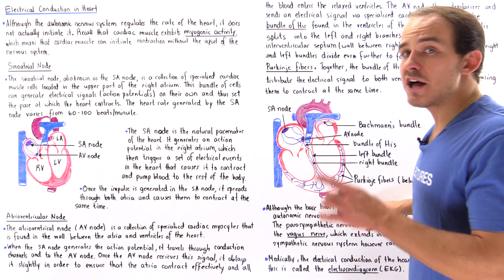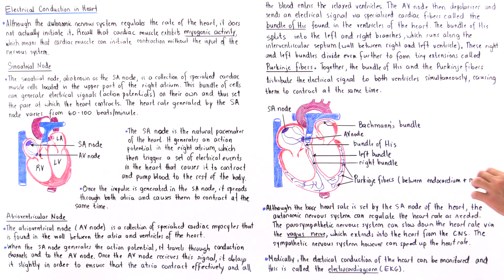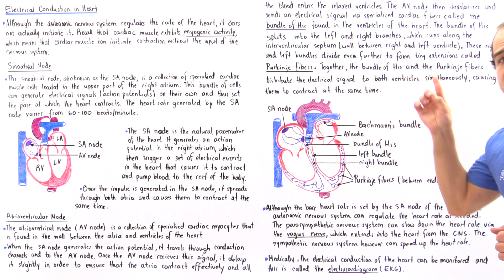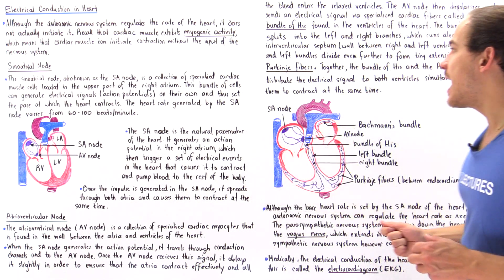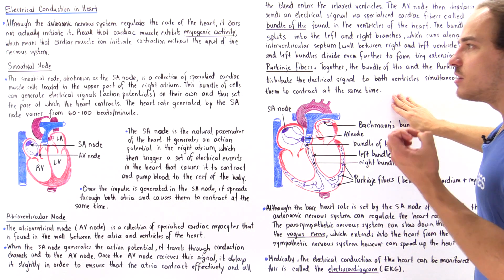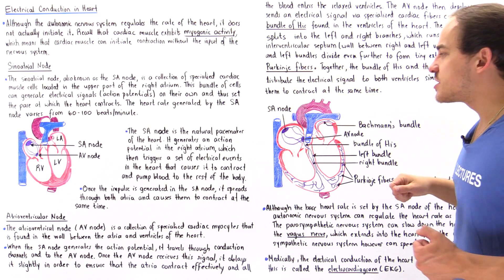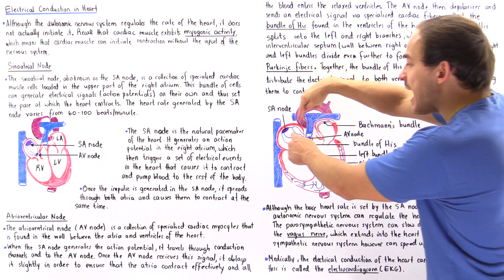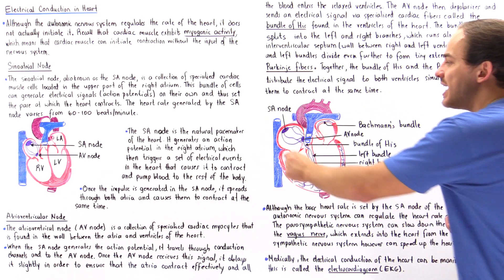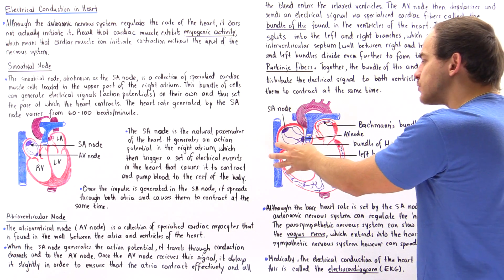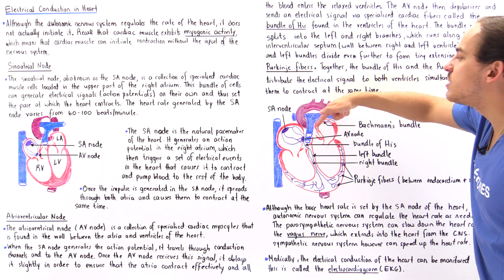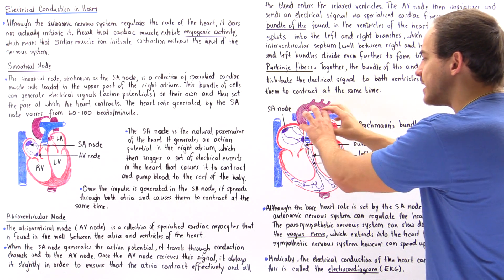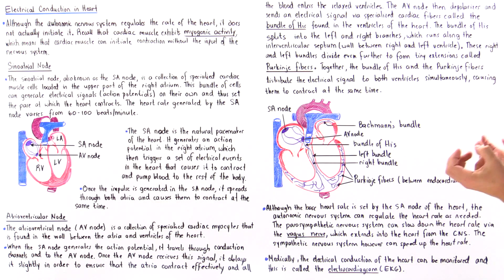The Purkinje fibers are found between the endocardium and the myocardium of the heart. Together, the bundle of His and the Purkinje fibers distribute that electrical signal through the two ventricles, causing them to contract simultaneously. The electrical signal generated within the SA node moves through conduction fibers in the right atrium and also through specialized fibers known as Bachmann's bundle, which travels through the left atrium, causing the right and left atria to contract at the same exact time.